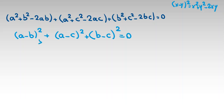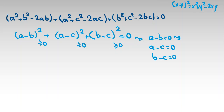Because each term is squared, they are each at least 0. So when their sum is 0, we conclude each of them must be 0. Therefore a minus b equals 0, a minus c equals 0, and b minus c equals 0, giving us a equals b, a equals c, and b equals c.